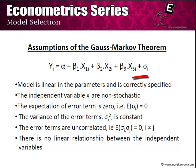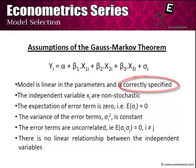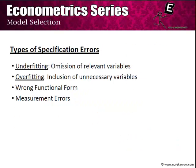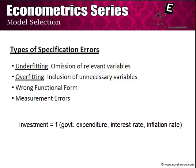Unless our model is correctly specified, we will be violating the Gauss-Markov theorem and hence our OLS estimates will not be BLUE, i.e. best linear and unbiased. There are basically four types of specification errors. Firstly, underfitting — that is, omission of a relevant variable. For example, if we talk about investment in a particular country and ignore the central bank rate, then we are committing an error of underfitting.